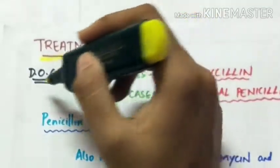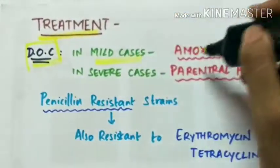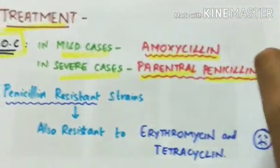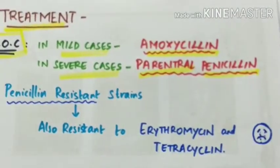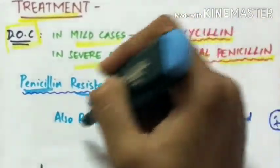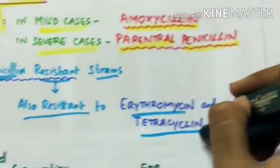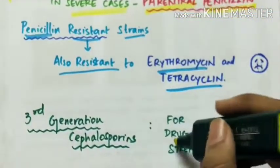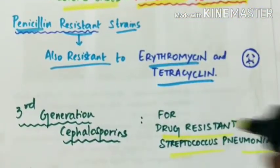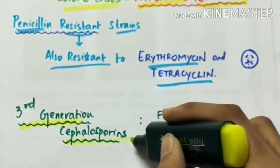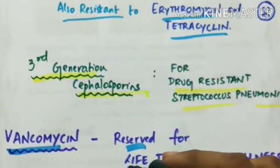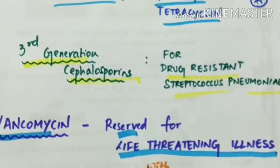Treatment. The drug of choice in mild cases is amoxicillin and in severe cases the drug of choice is parenteral penicillin. The penicillin resistant strains are also resistant to erythromycin and tetracycline. So erythromycin and tetracycline also can be used. For drug resistant Streptococcus pneumoniae, third generation cephalosporins are used. Finally vancomycin is reserved for life threatening illness with highly resistant strains.